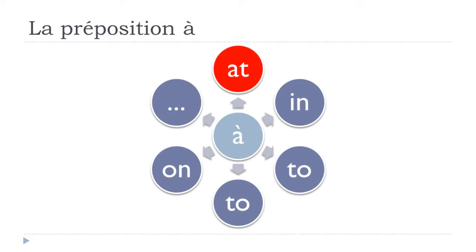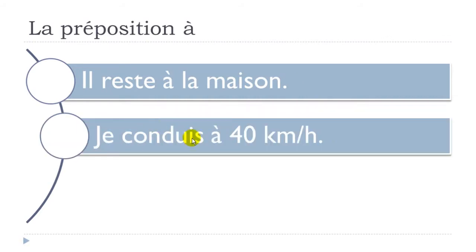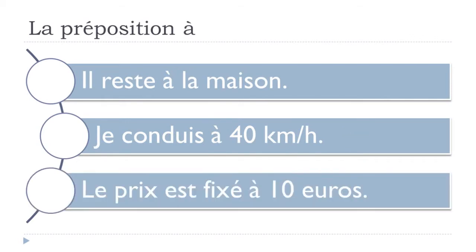We'll start with 'at'. The first example: 'il reste à la maison' — rester means to stay, so 'il reste à la maison' means 'he stays at home'. Second example with 'conduire' (to drive): when introducing speed, you use À — 'je conduis à 40 km/heure' means 'I drive at 40 km per hour'. Last example for 'at': expressing a price — 'le prix est fixé à 10 euros'.